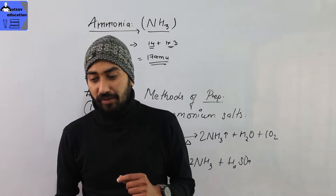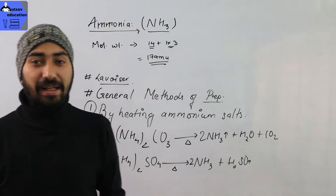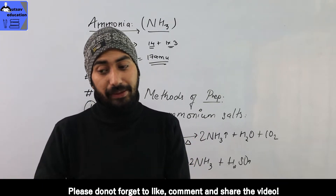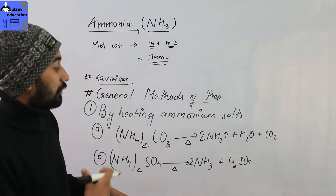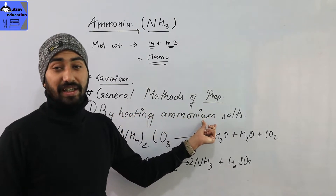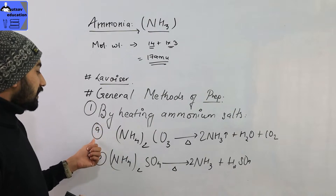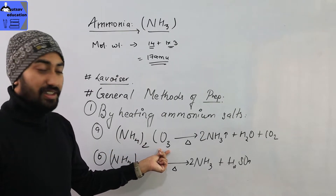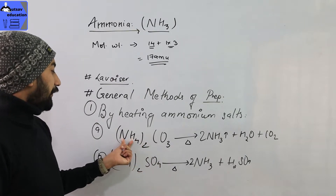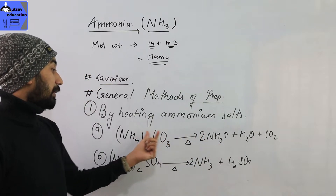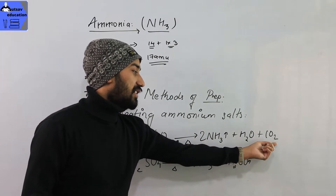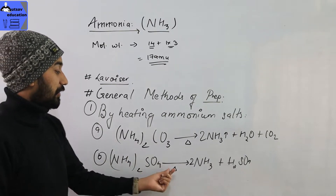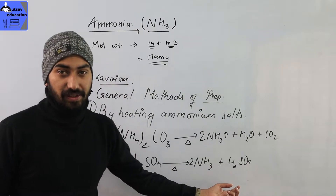General methods of preparation of ammonia: the first method is by heating ammonium salts — sulfate, carbonate, bicarbonate, chloride, sulfide. First example: ammonium carbonate when heated gives two molecules of ammonia plus carbon dioxide plus water. Second example: ammonium sulfate when heated gives ammonia and sulfuric acid.